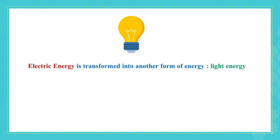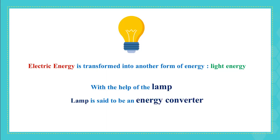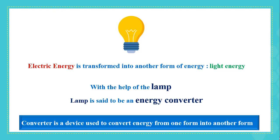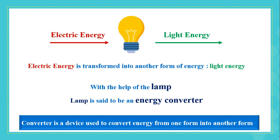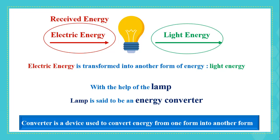As you have seen in the video, energy can be transformed from one form to another. As in the case of a lamp, the electric energy is transformed into light energy with the help of this lamp. The lamp is said to be an energy converter. An energy converter is a device that converts or transforms energy from one form to another form. Electric energy in this case is referred to as received energy, and light energy is referred to as produced energy.